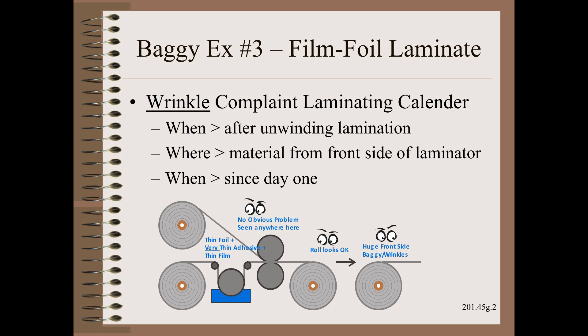If we look just upstream, the winding roll looks okay at first glance. However, as we learned in Web 101, the most common cause of wrinkling may be bagginess, and that bagginess is most often caused by a product not being level enough. If we look just upstream of the winder, everything else also looks okay. If we look and test the three components — film, foil, and adhesive — they all test within spec and do not exhibit any consistent or particular shape.